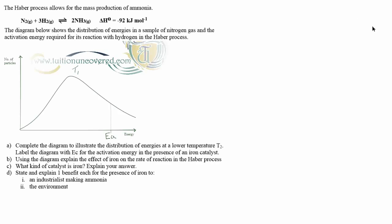So, my answer. The question refers to the Haber process, as you saw here, nitrogen and hydrogen reacting to form ammonia. We've addressed this in a previous video. The enthalpy change for the forward reaction is an exothermic, minus 92 kilojoules per mole. Therefore, the diagram shows the distribution of energies in a sample of nitrogen gas, the activation energy required for its reaction with hydrogen in the Haber process. It's a nice story. What the examiner is trying to test here is the Boltzmann distribution part of the syllabus, not specifically the Haber process.